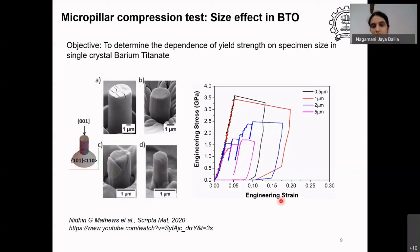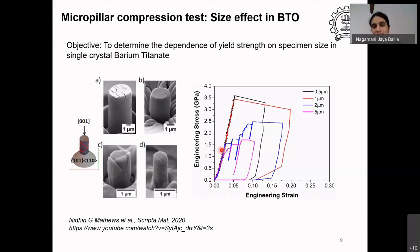The stress-strain curves converted from the load-displacement data show plots for different sizes. For five microns you see the pink curve, and with decreasing size the curve continues to remain elastic to a larger and larger stress value. So the elastic limit is clearly different for each of these different sizes.